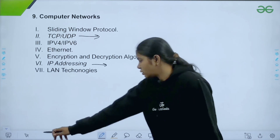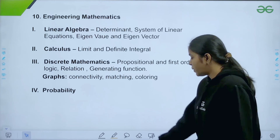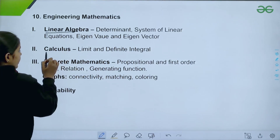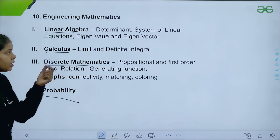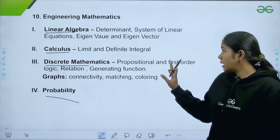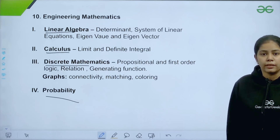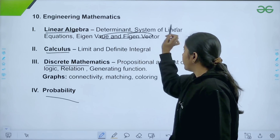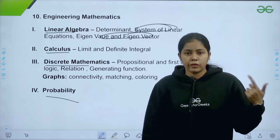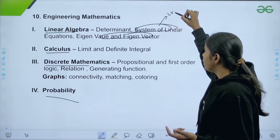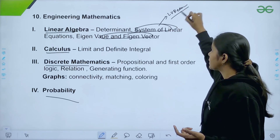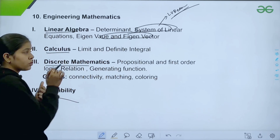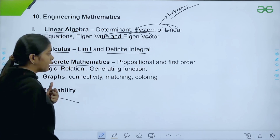Next is Engineering Mathematics, which is divided into four parts: linear algebra, calculus, discrete mathematics, and probability. In linear algebra, the important topics are determinants, systems of linear equations, and eigenvalues and eigenvectors. Based on past patterns, eigenvalues/eigenvectors and systems of linear equations are asked very frequently, and LU decomposition has been asked for the past two years. In calculus, the two important topics are limits and definite integrals.